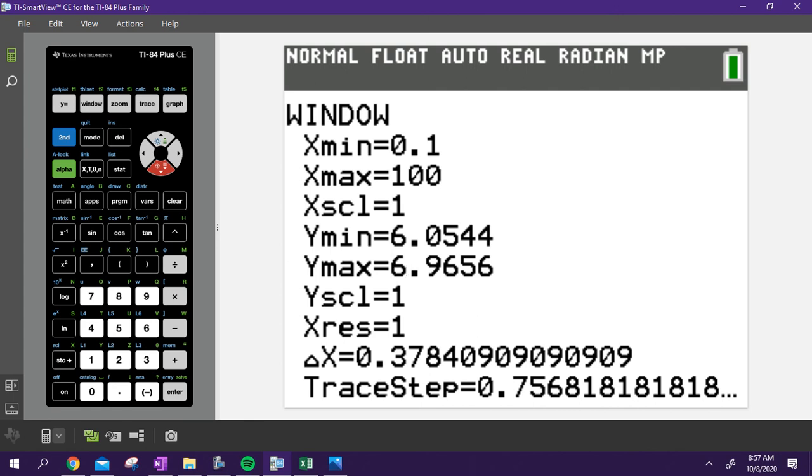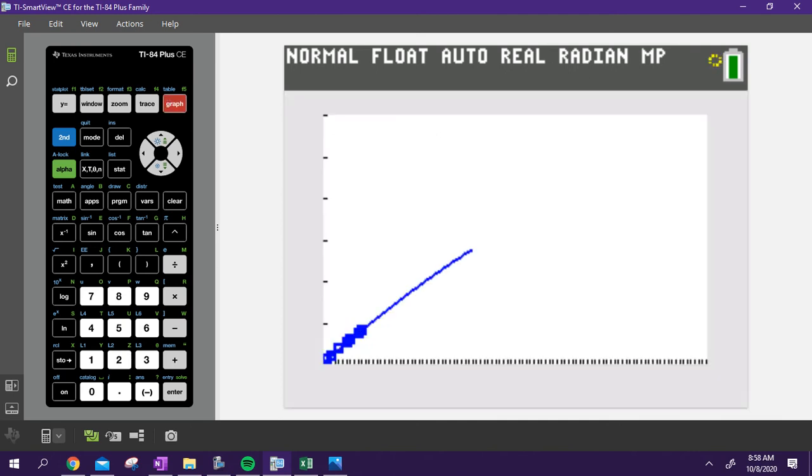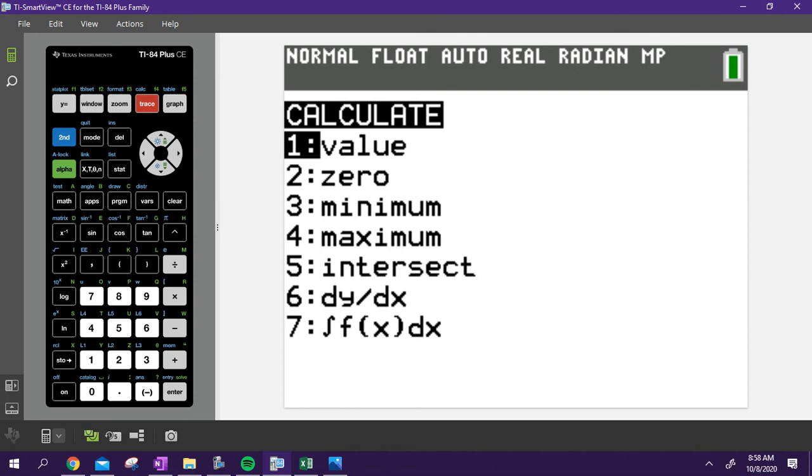I'm going to go to 12. I know I'm not going to get to 12 because our carrying capacity was 11 point something. Graph that thing. There's my graph, there's my line, that's 10 billion. Now we're going to go Second, Calculate, the Intersect.